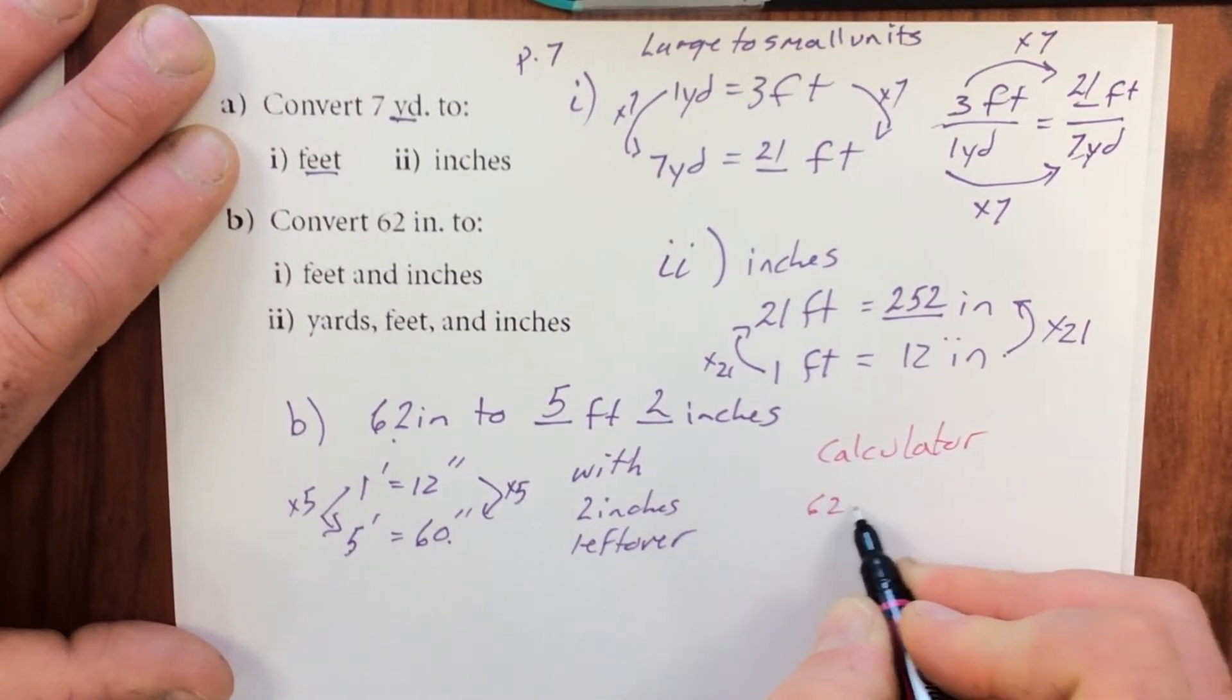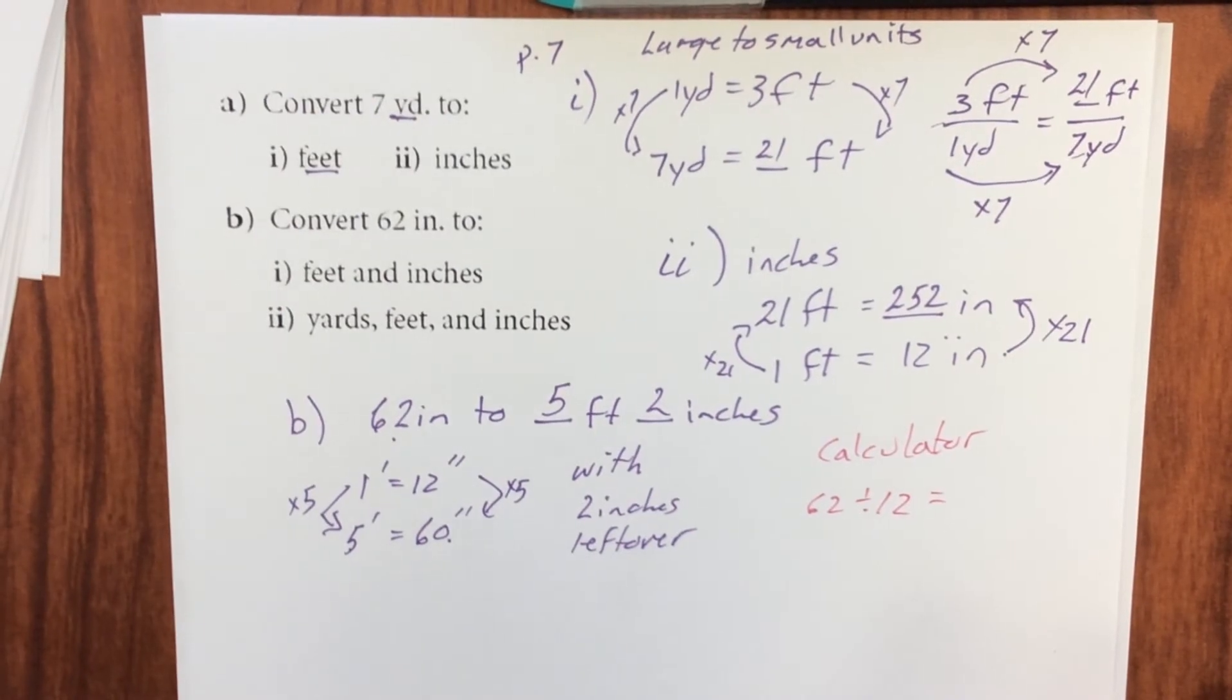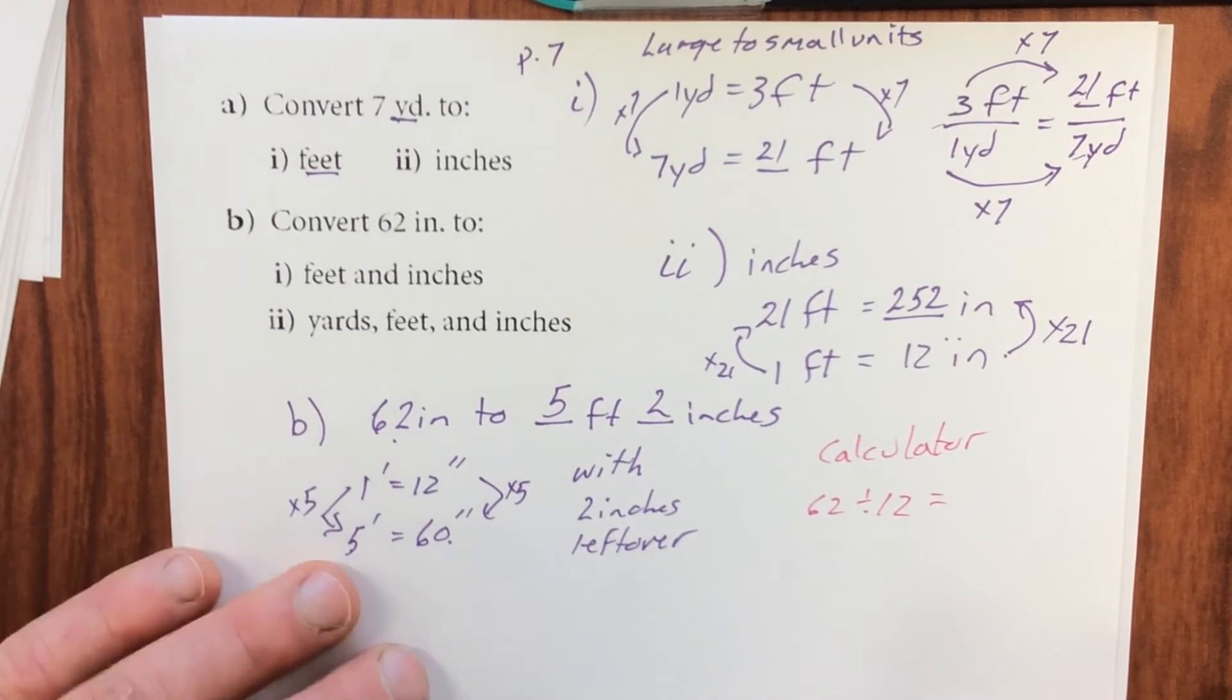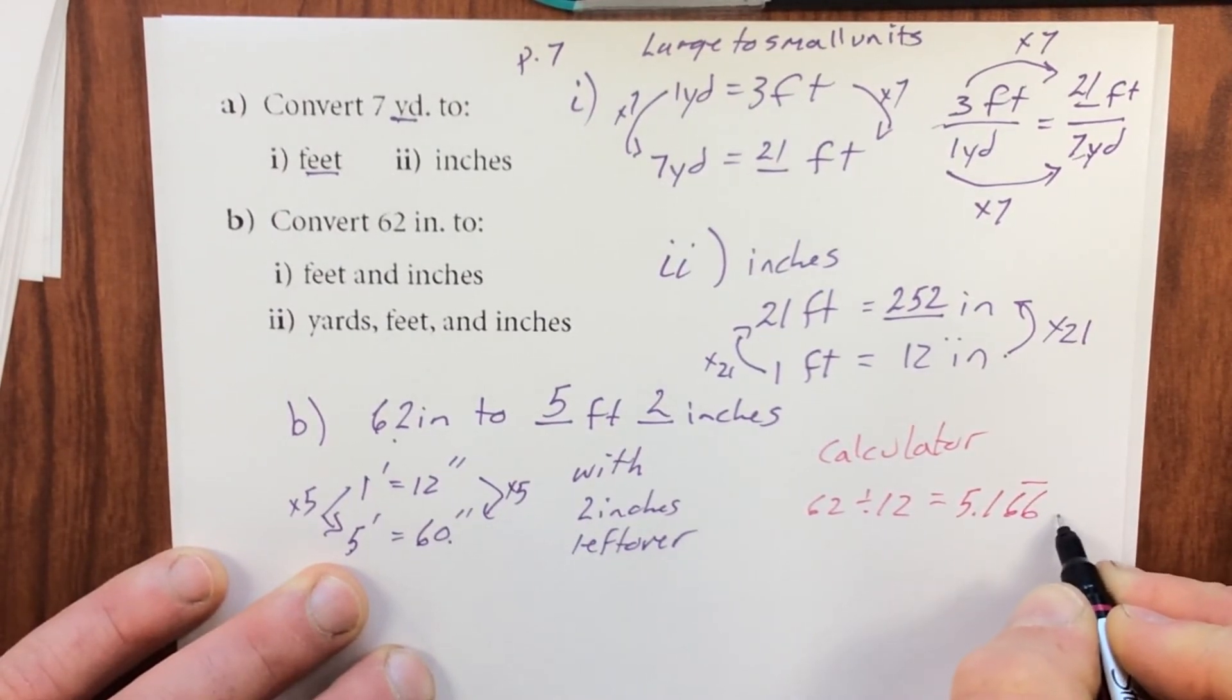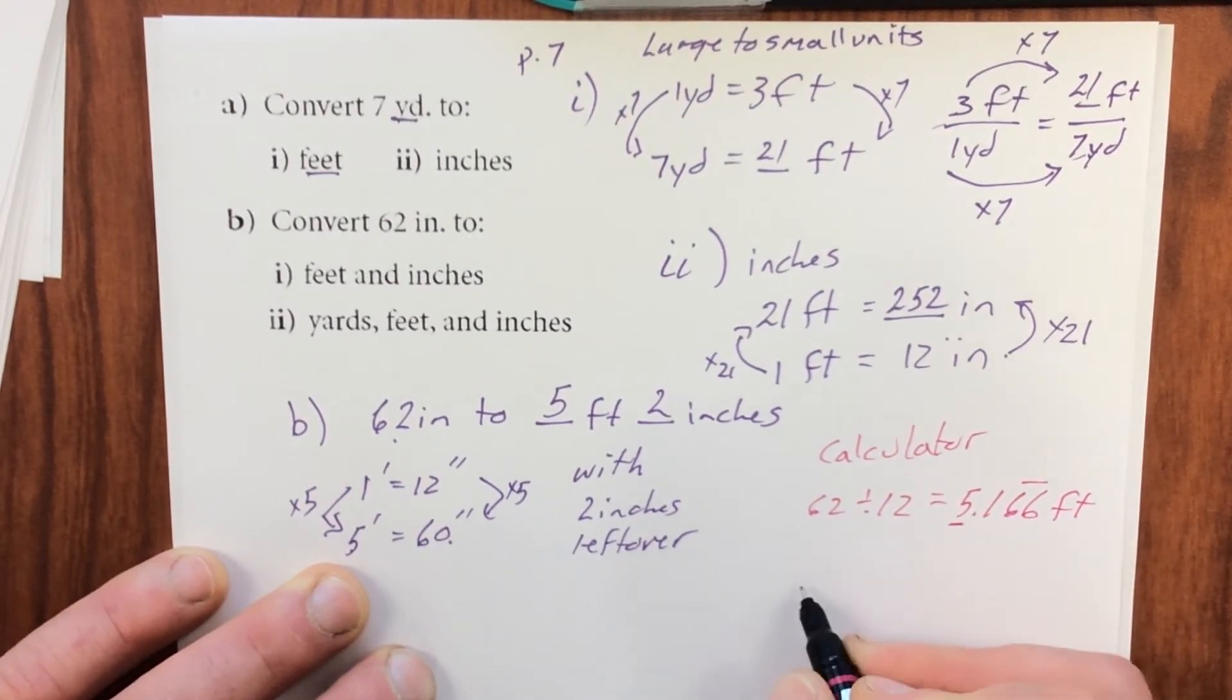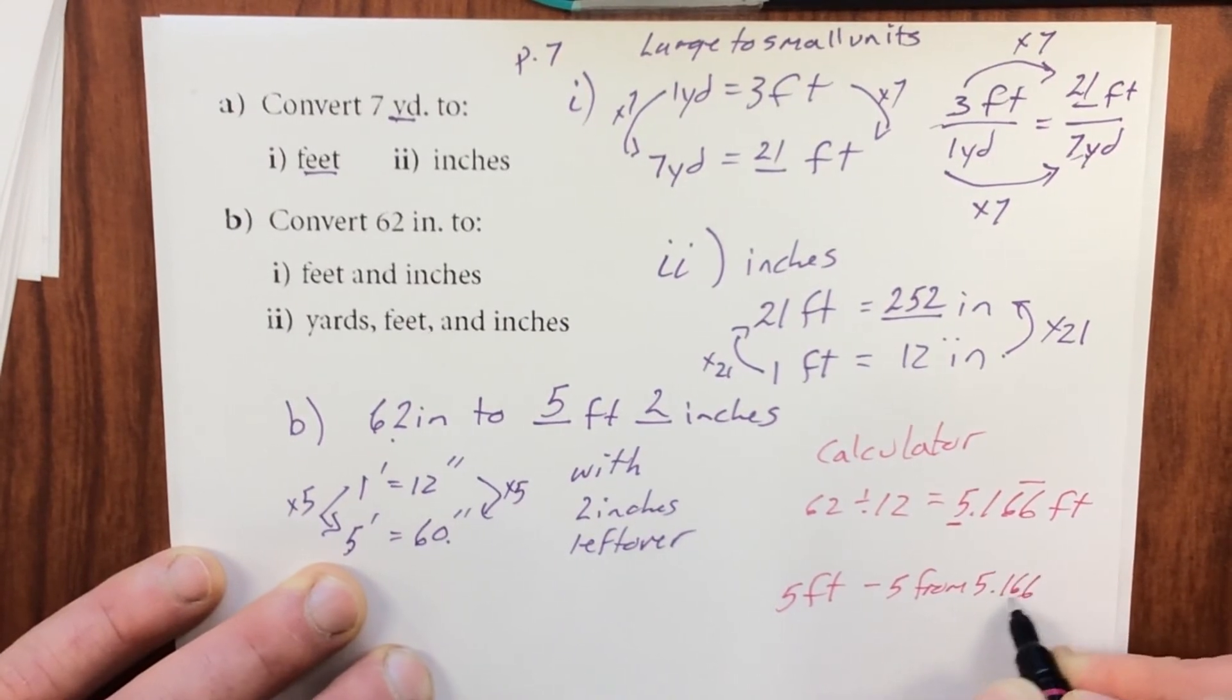Take 62, divide it by 12. That's going to give me 5.166 feet. So I know I have five feet. So I have five feet. So I'm going to subtract five from 5.166.